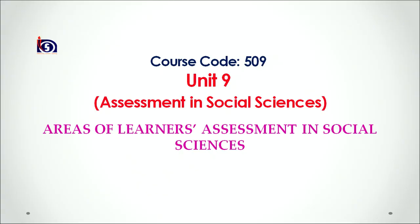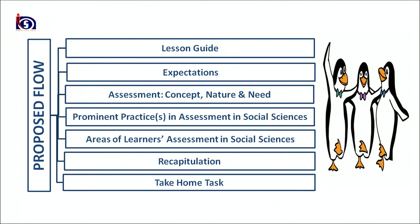Today we are going to talk on Unit 9, which is on assessment in social science, and today's topic is areas of learner assessment in social sciences. Before moving on the topic, let me discuss the proposed flow of the lesson: first I'll share the lesson guide, then learning objectives, then assessment concept, nature and need, then prominent practices in assessment in social sciences, then areas of learners assessment, then recapitulation, and finally a take-home task.